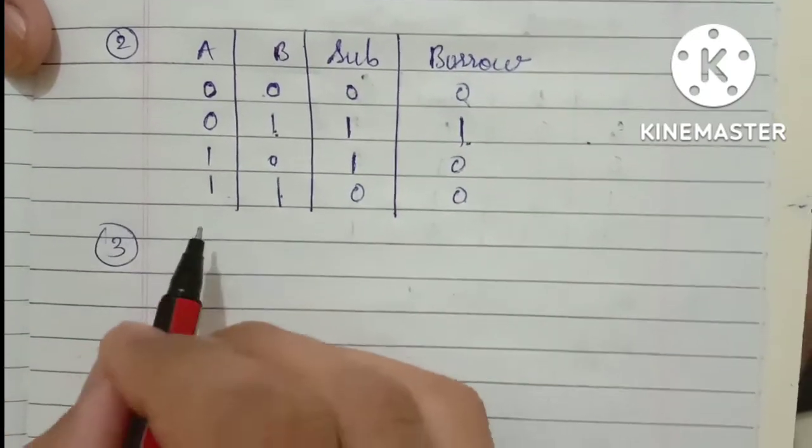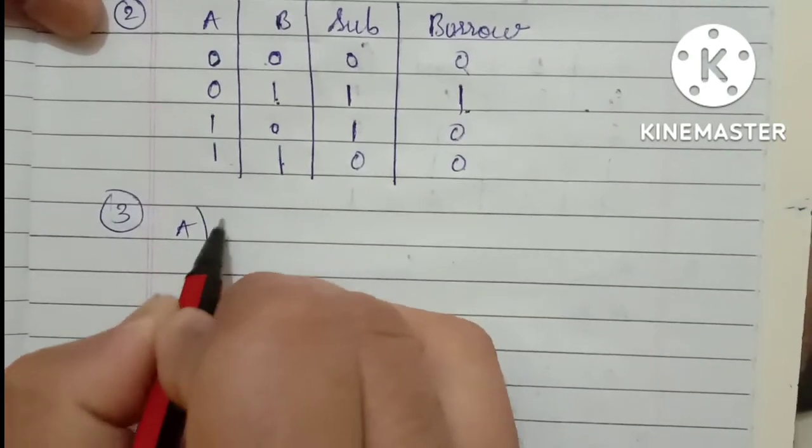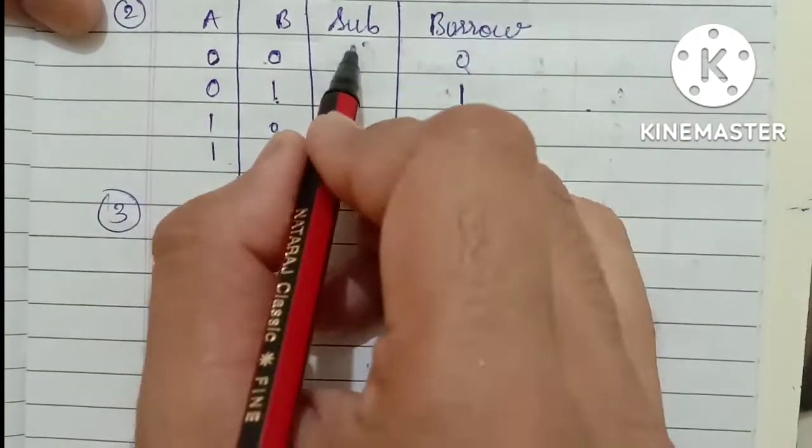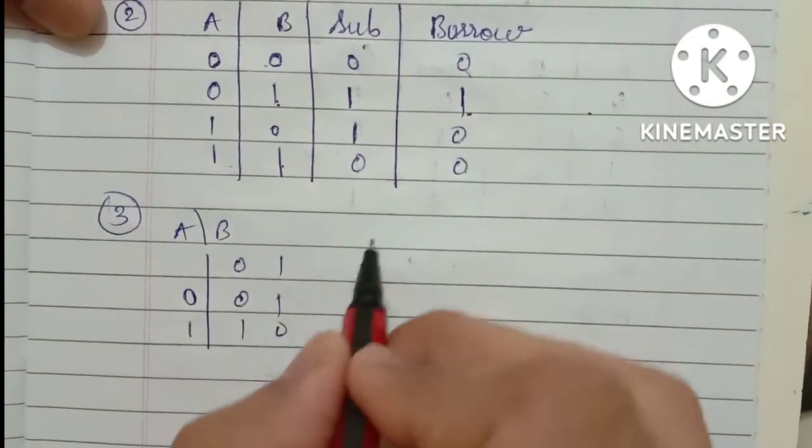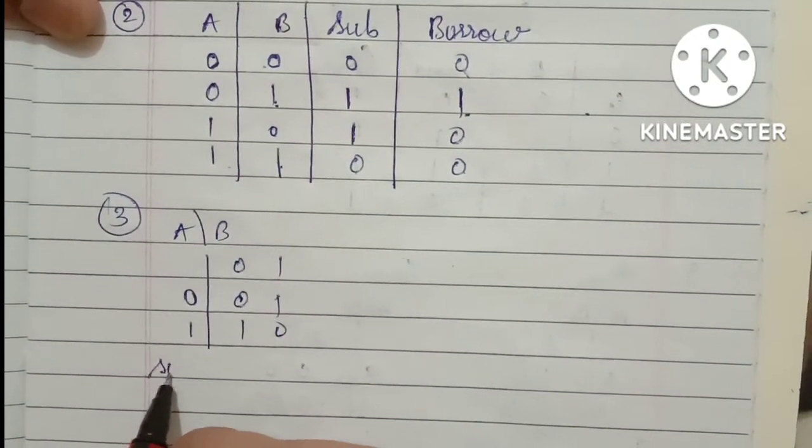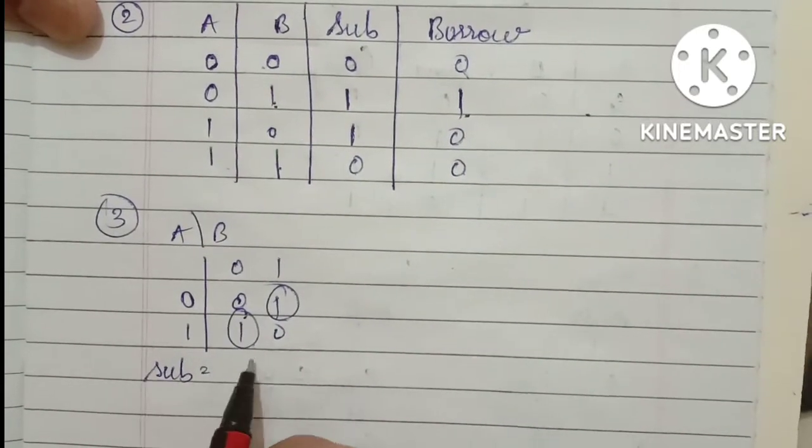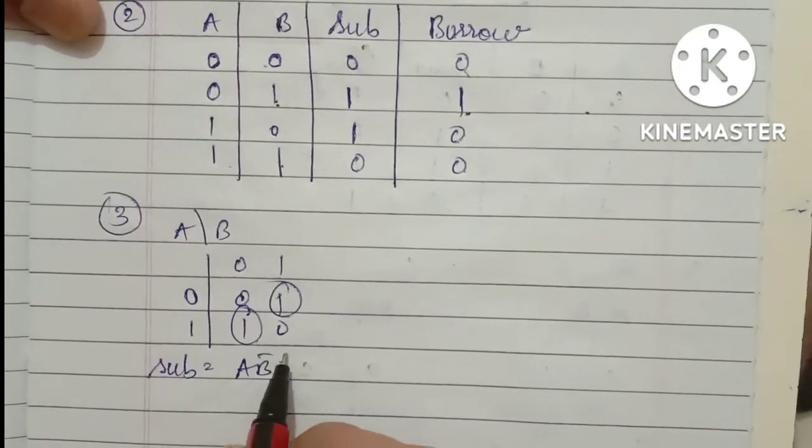And now, same thing, K-map for two-bit, two variable. You already know how to draw this. You have to just write this exactly, zero, one, one, zero. So you will get the subtraction result. Same thing, no pairing. Only single one is there. Then you directly write. This also will give you the result.